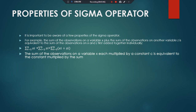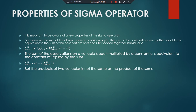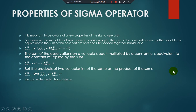So, sigma from i=1 to n of c times x_i equals c times sigma x_i — you can bring the constant before the summation operator. However, the product of two summed variables is not the same as the product of their individual sums. That is, sigma of x_i times z_i is NOT equal to (sigma x_i) times (sigma z_i).